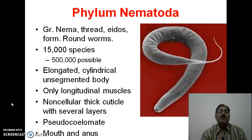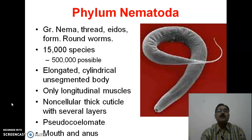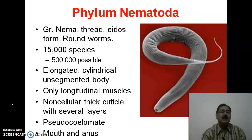What is the meaning of Nematoda? 'Nema' means thread and 'idos' means form. They are known as roundworm, threadworm, or pinworm. Because if we cut a cross section along their body it appears rounded, and they have both ends tapering — hence they are known as pinworm. And the body is more or less like a thread, hence they are known as threadworm.